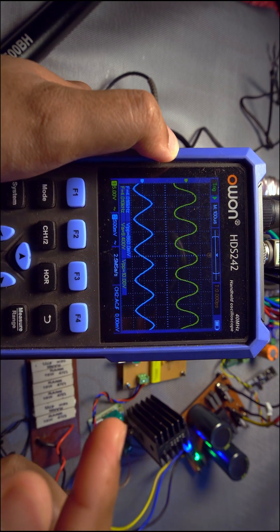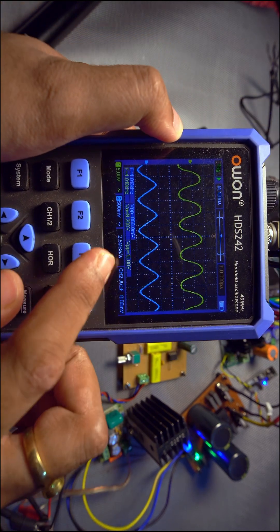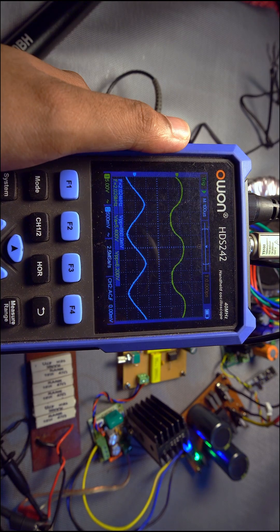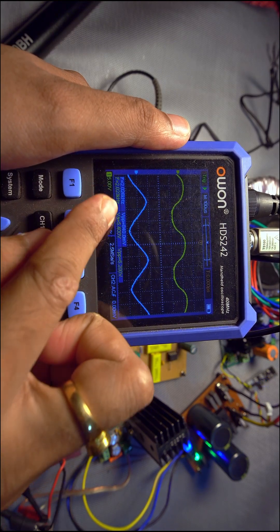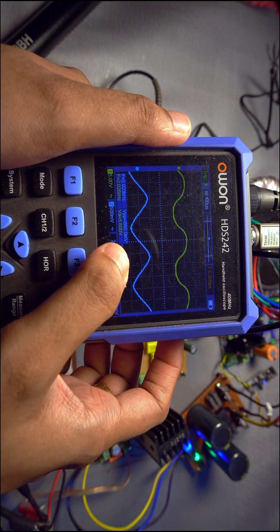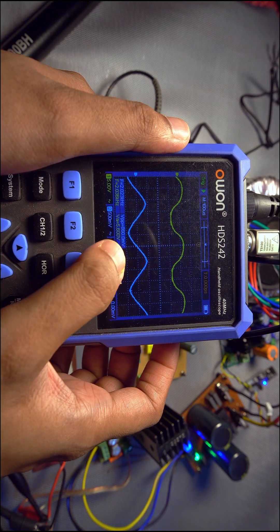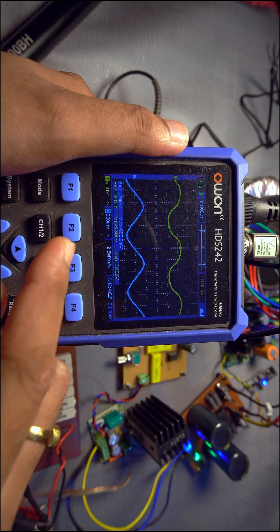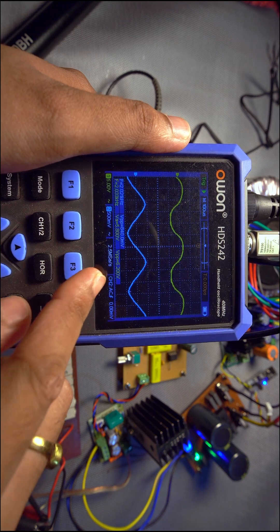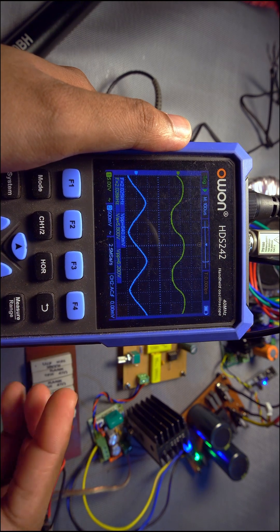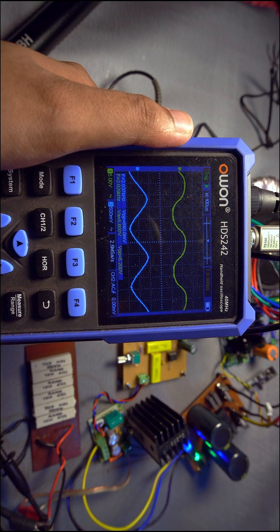So I will set the function generator to 2 kHz and we will see what happens to this V peak-to-peak. I have set the frequency to 2 kHz and you can see the input voltage is still the same, 860 mV as earlier. And at 2 kHz the V peak-to-peak is 6.2 volts. Well, it's not half of the 10 volts but it's close.